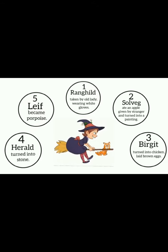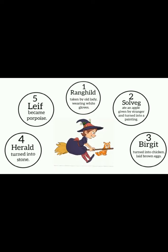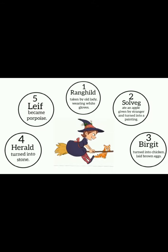A porpoise is an animal that looks like a dolphin. Leif turned into a porpoise when he was on a vacation with his family. So this is how the five children disappeared. Grandmother wanted her grandson — this boy — to be with her and did not want to lose him. So she said that if you obey my words, listen to me, and stay inside the house, you will be safe because witches will not come inside the house.